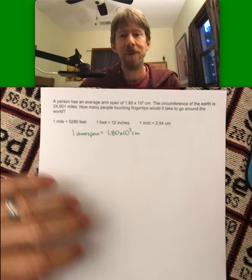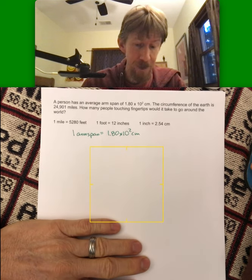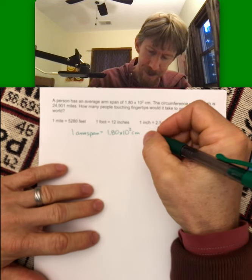That's going to end up being one of our unit conversions. The circumference of the earth is 24,901 miles. How many people touching fingertips would it take to go around the world?